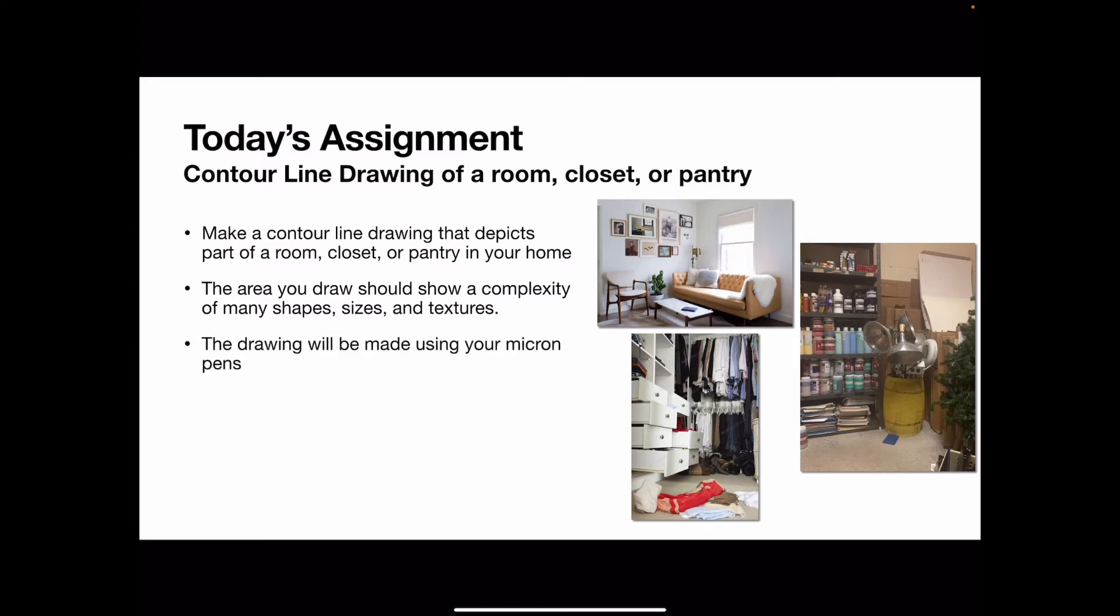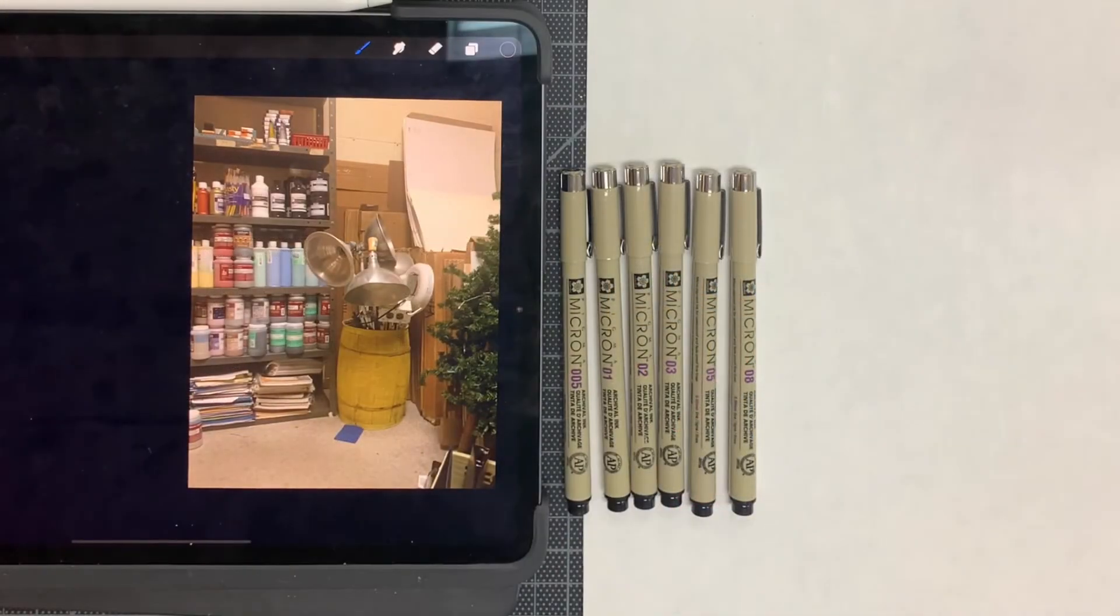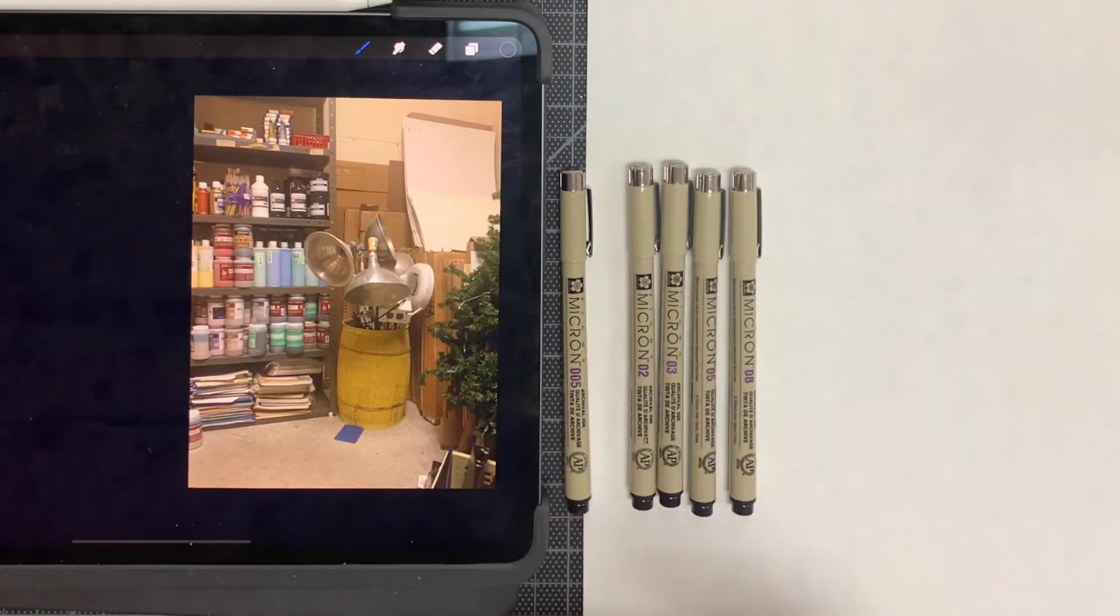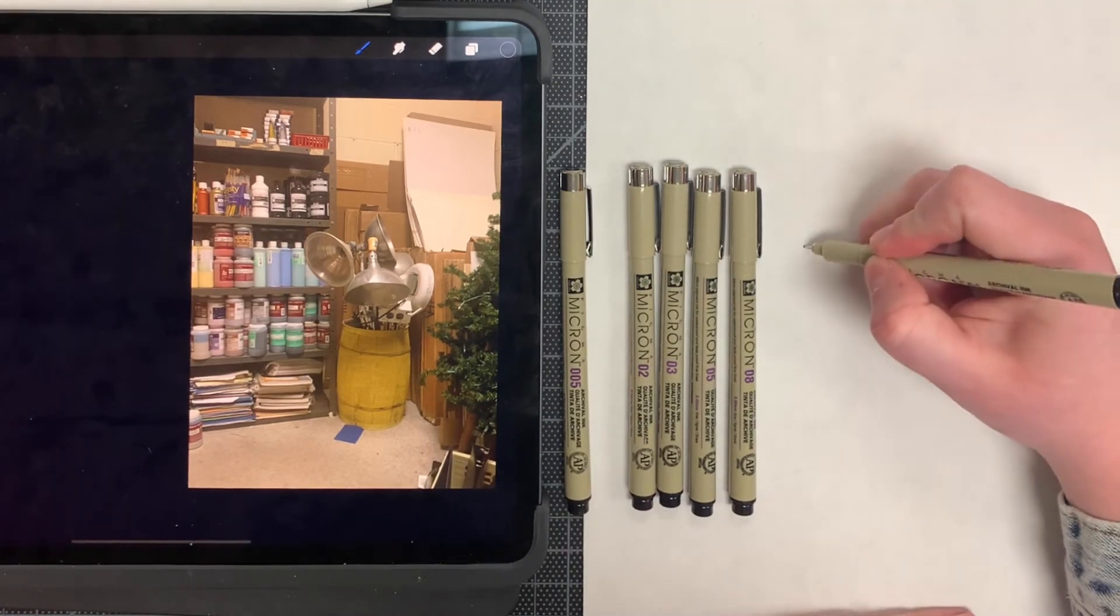This drawing is going to be made using your micron pens and I'd like you to complete this drawing in your sketchbook. So for this drawing, because it's a contour line drawing, I only want you to draw the outline of each object and do not shade anything. When you begin drawing, I recommend grabbing a size 01 or 02 micron pen to get started.